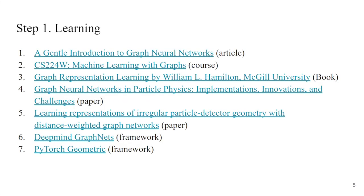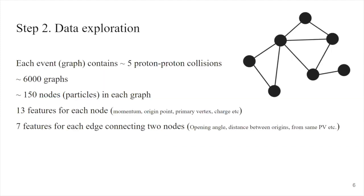On the first step, I started learning. I'll cite here some resources that I found useful for anyone who wants to dig deeper into graph neural networks. Let me walk you through the data. We have this proton-proton collision and each event has on average five proton-proton collisions. We have about 6,000 such events, 6,000 graphs, and each of these graphs would have about 150 nodes representing particles. Each of those nodes would have 13 features, and the connections between nodes have about 7 features.